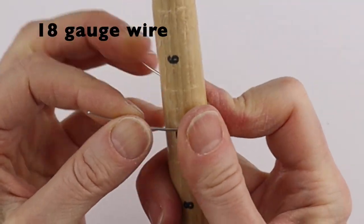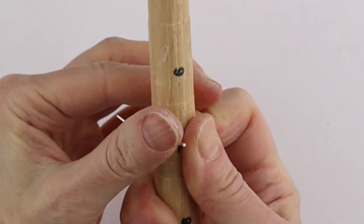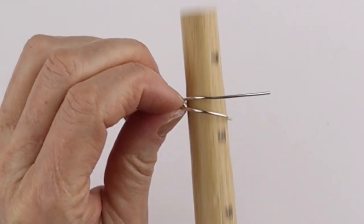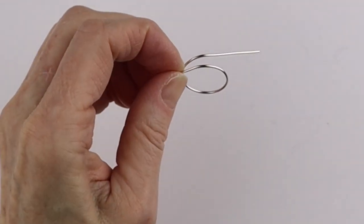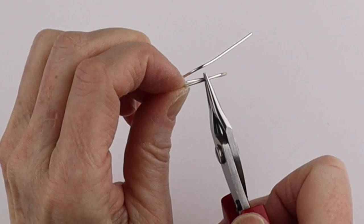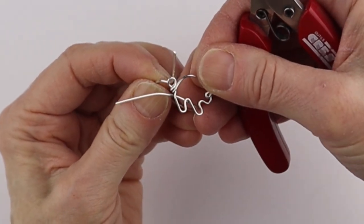Now get an 18 gauge wire, twist it around for the band on your ring mandrel and then get your pliers and bend the wire up at a right angle.